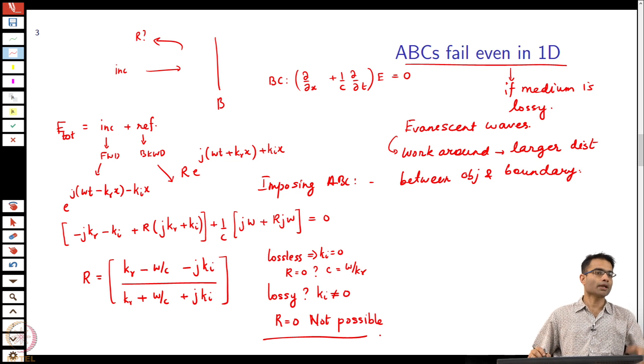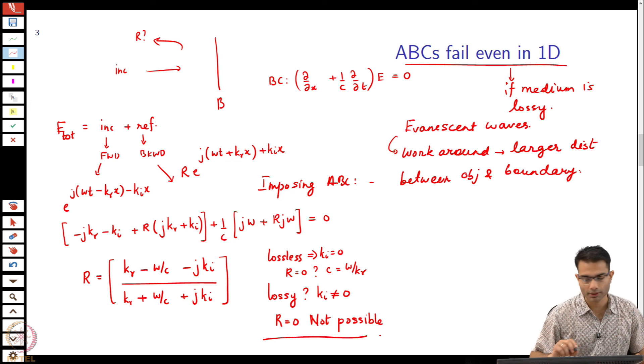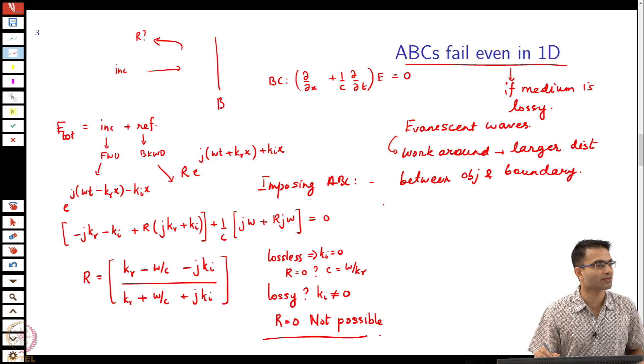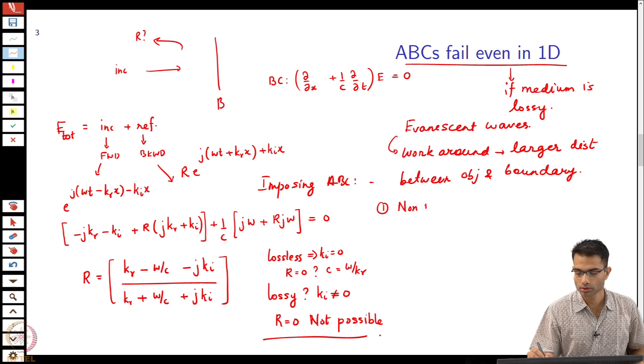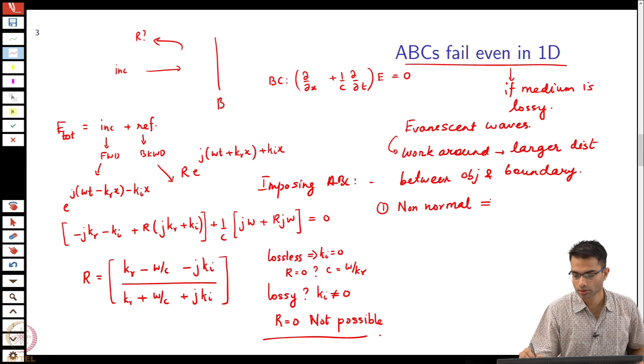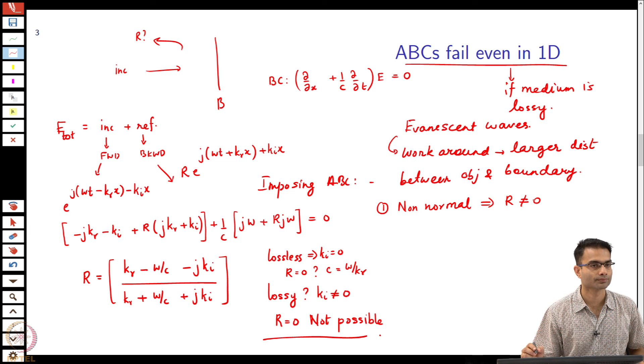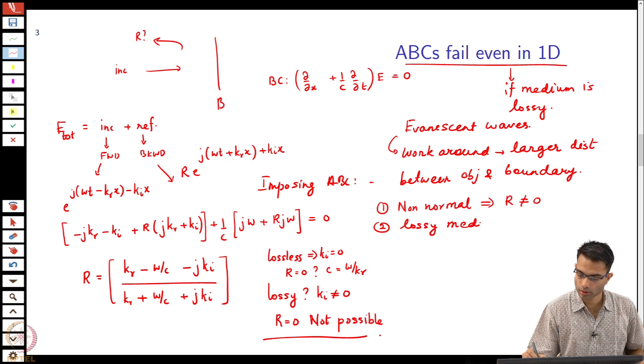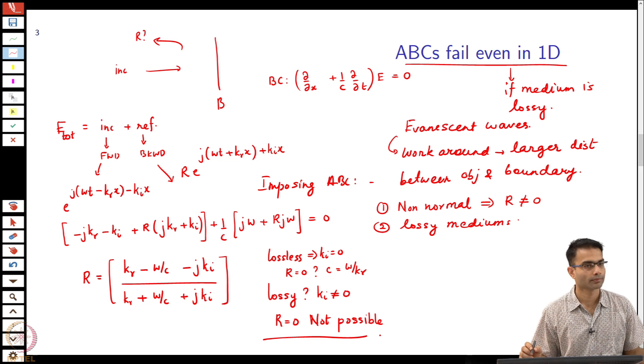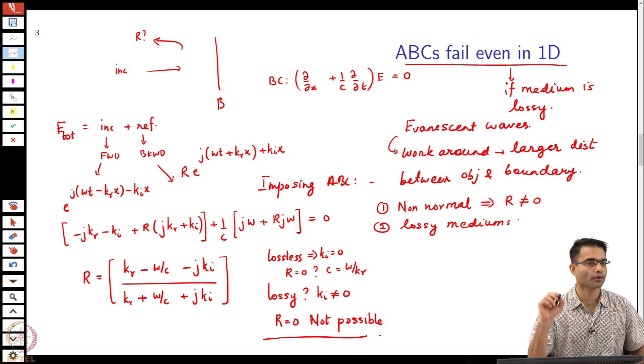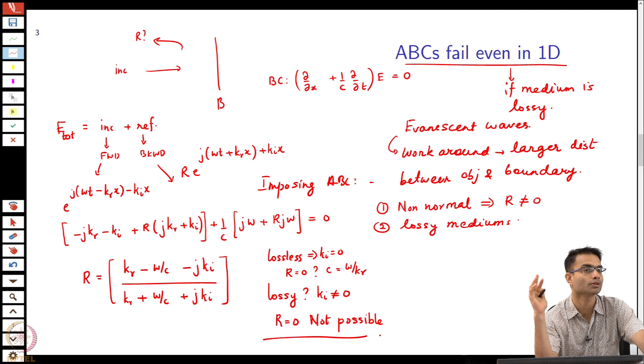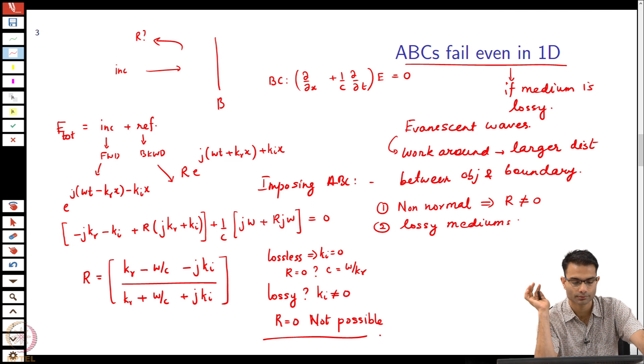As it is, the moment I deviate from 1D anyway I am going to have a non-zero reflection coefficient, we have seen before. To summarize, there are two reasons that we say that the ABCs fail. The first is of course that non-normal incidence gives a reflection coefficient that is non-zero. We already saw that. And the second is lossy mediums. This motivates us to go for something else. We want to find a solution that does not increase the size of my computational domain a lot and gives me good accuracy.